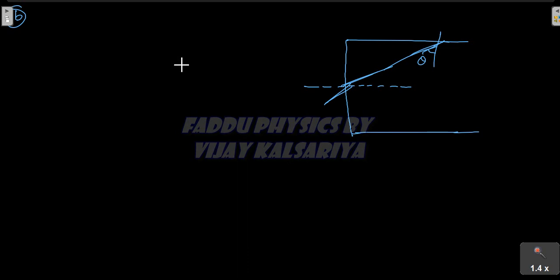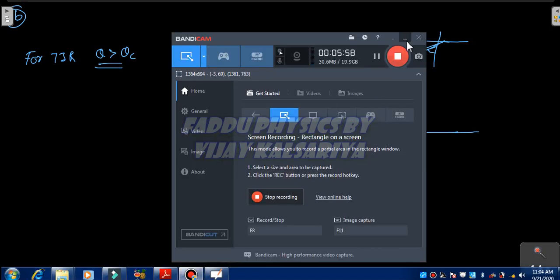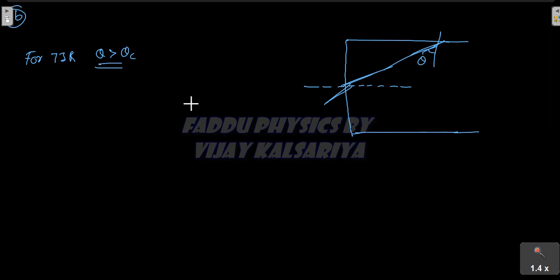For total internal reflection in this case, theta should be greater than theta-C. The critical angle theta-C equals sine inverse of N2 by N1. Here N2 is 1 for air medium and N1 is 1.68. So theta-C equals sine inverse of 1 divided by 1.68.